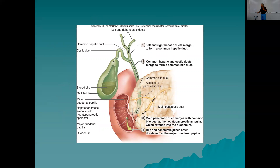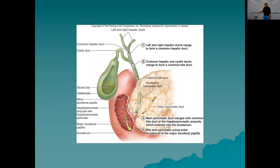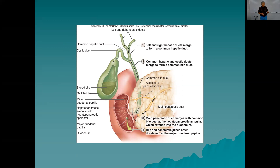The bile duct system: the left and right hepatic ducts merge to form the common hepatic duct; the cystic duct leads into the gallbladder. The common hepatic duct and cystic duct merge to form the common bile duct. The common bile duct joins the main pancreatic duct at the hepatopancreatic ampulla, which empties into the duodenum at the major duodenal papilla. These are structures you'll need to identify in the lab and could be on the digestive system practical.